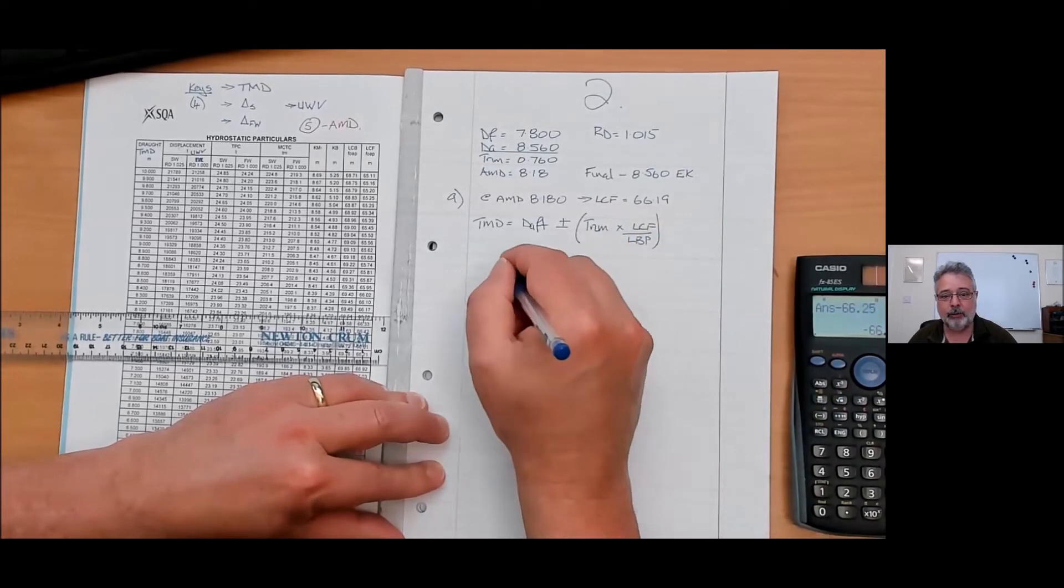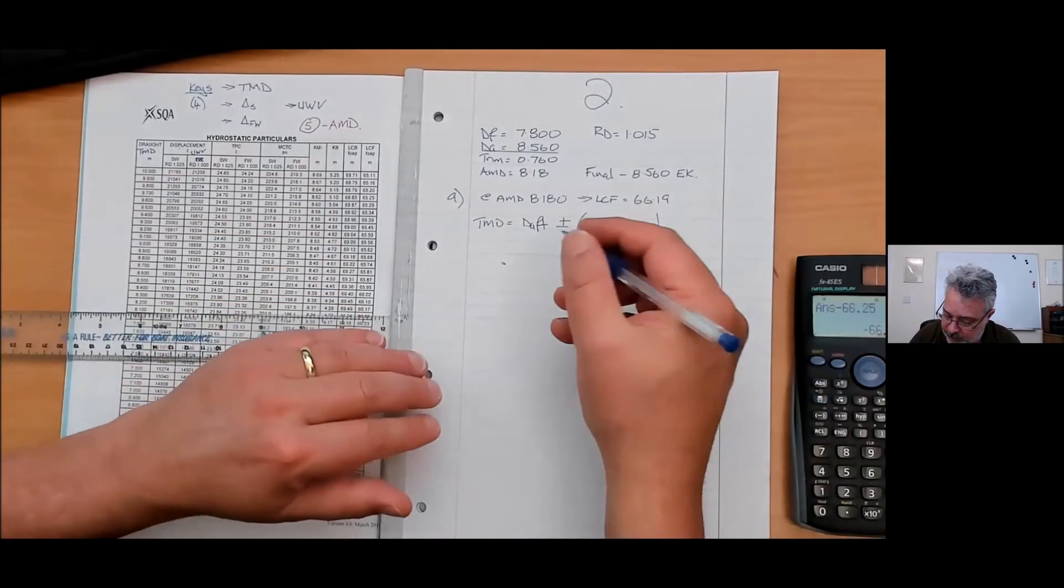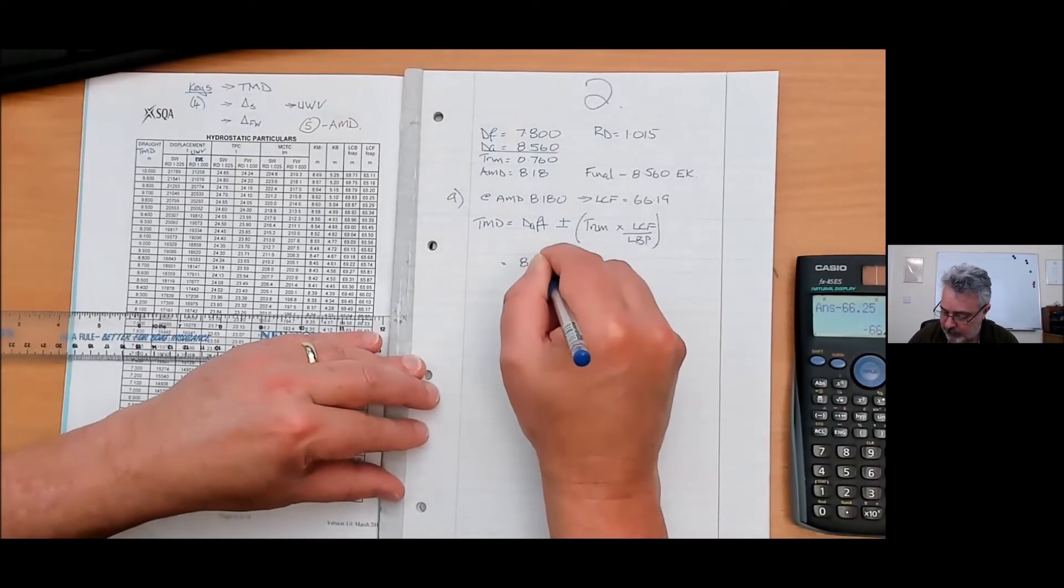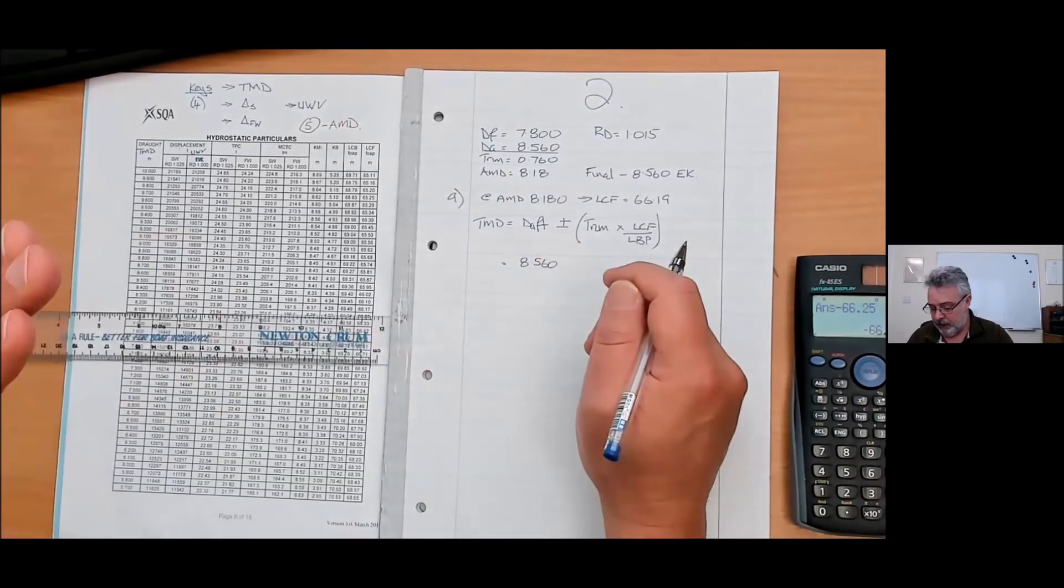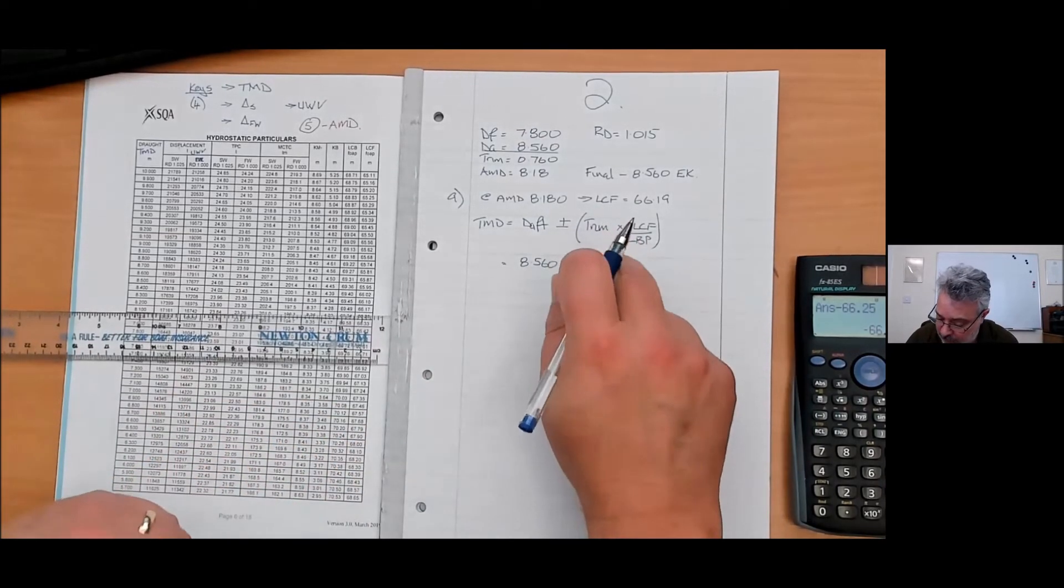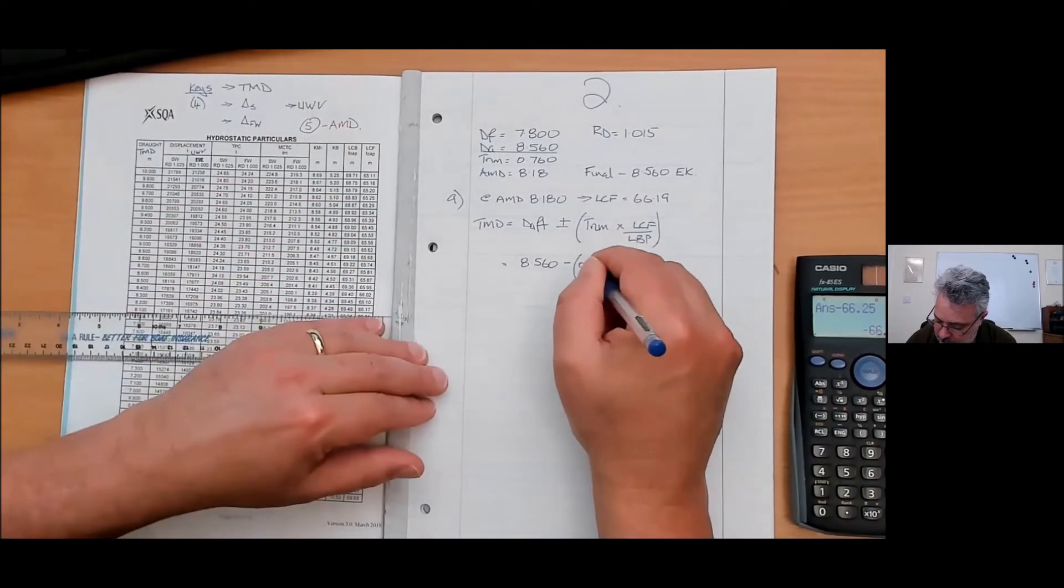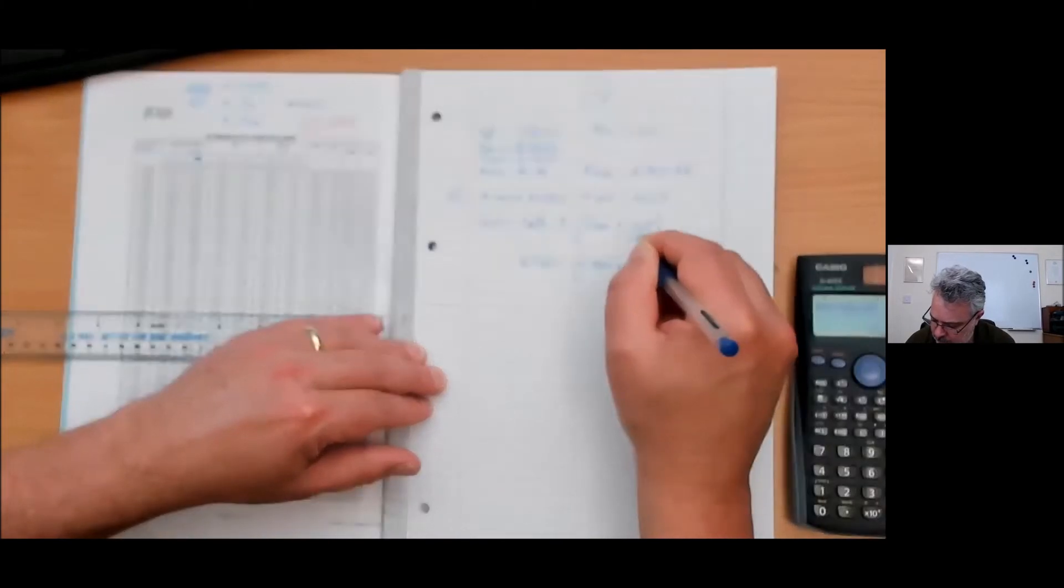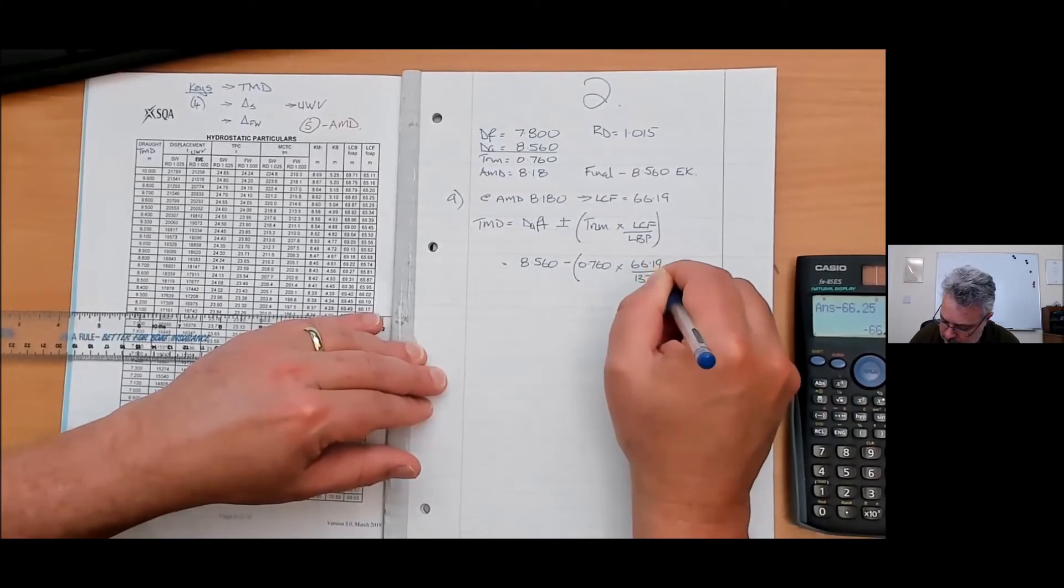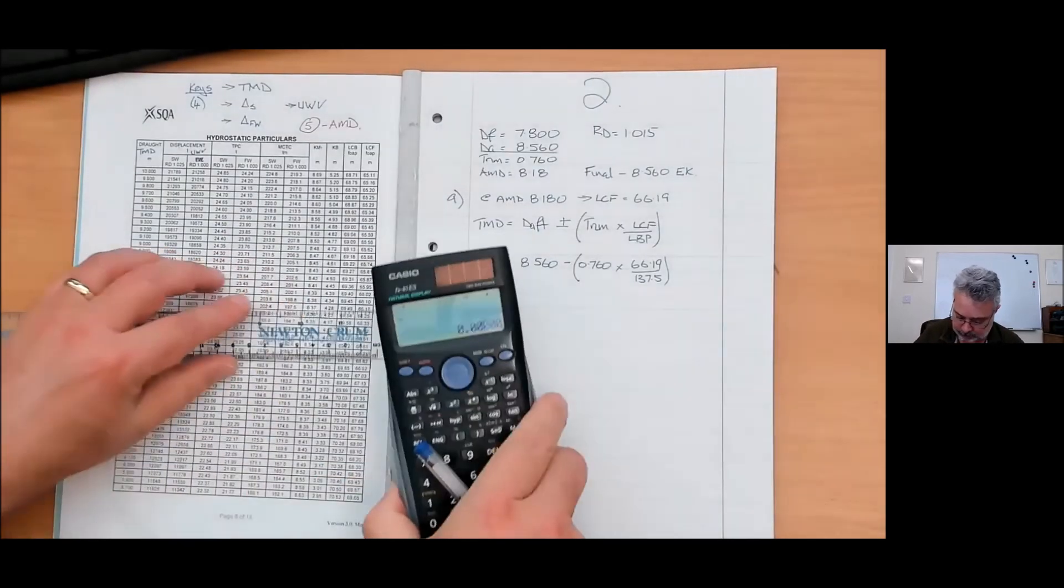Formula then values. Please tell the marker how you're doing it. TMD is equal to draft aft plus or minus trim times LCF over LBP. Draft aft up there. Now is it plus or minus? Well, we're trimmed by the stern. Therefore, true mean draft is less than half draft by this correction. So it's minus. Stop and think. Don't charge ahead.